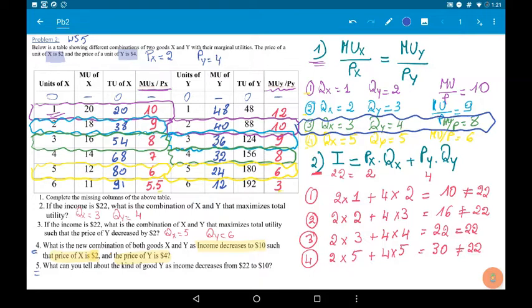was QX equals 5 and QY equals 6. Now, we'll move to question 4.